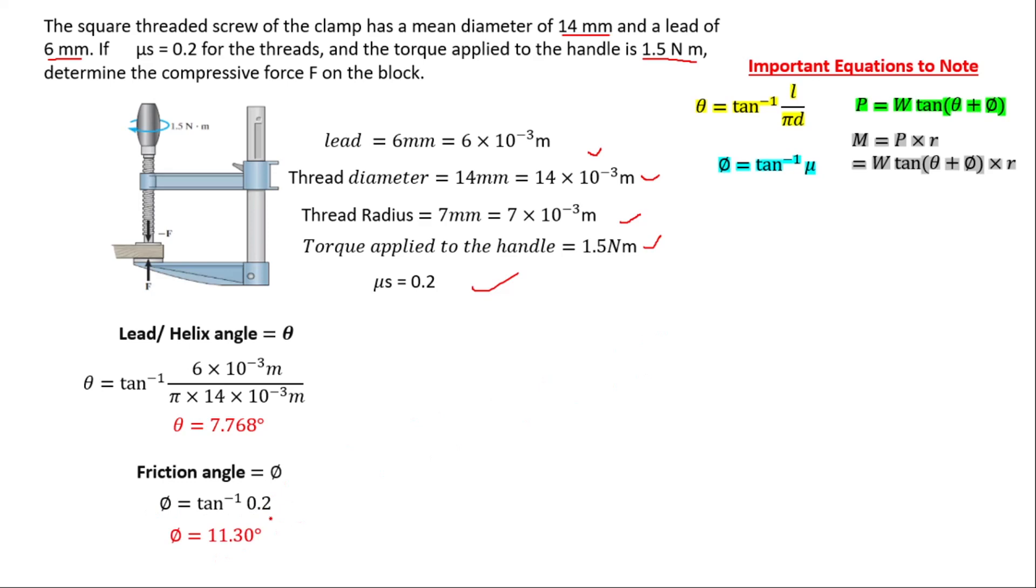But note this. This is not part of the question, but I want you to note this. If the friction angle is larger than the lead angle, the screw is said to be self-locking. So this screw is self-locking.